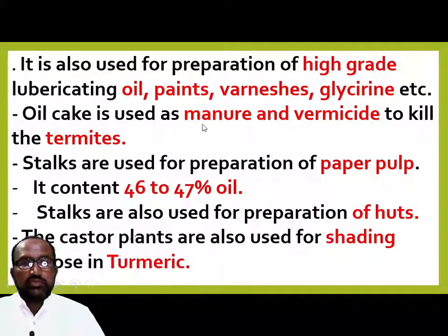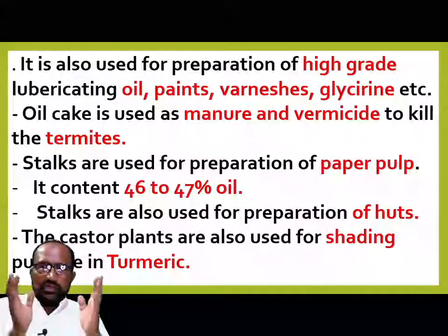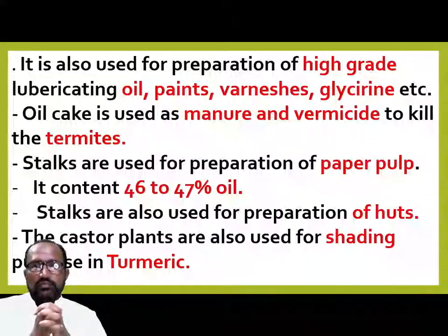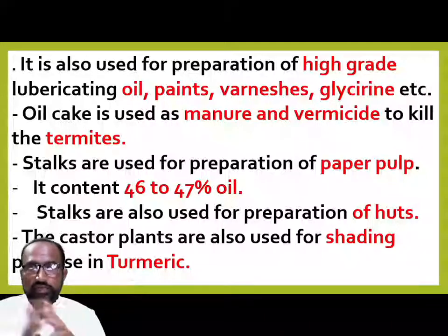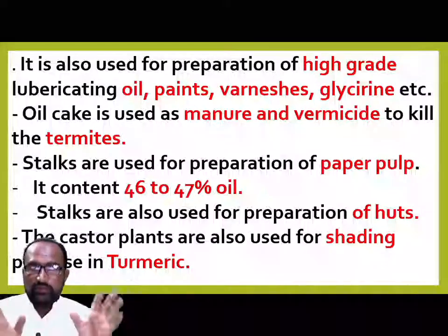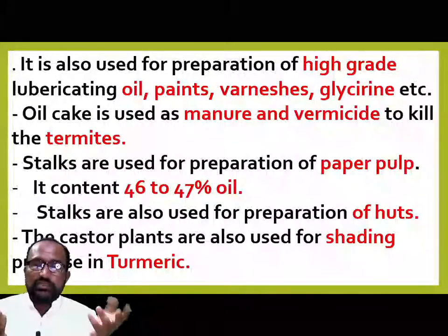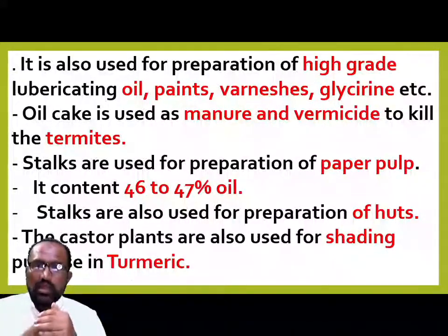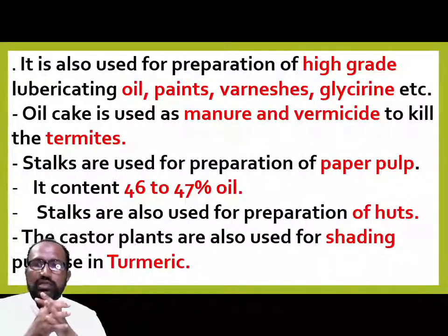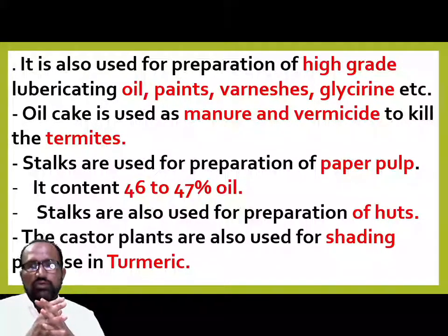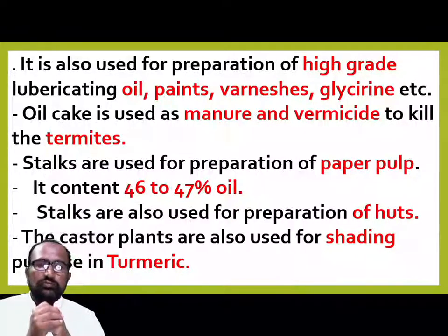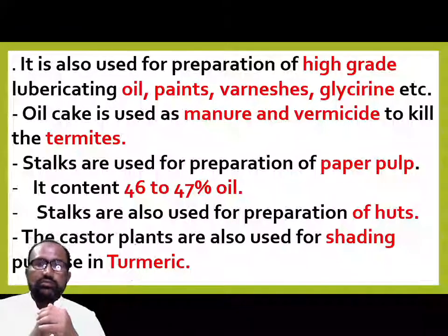The oil cake remaining after oil extraction is used as a manure and has vermicidal properties to kill termites. The castor cake (paint/residue) is generally not used for eating but is used as manure. When the cake is applied to the soil, it kills termites present in the soil, so it is used as a vermicidal agent, which is also beneficial for the crop.